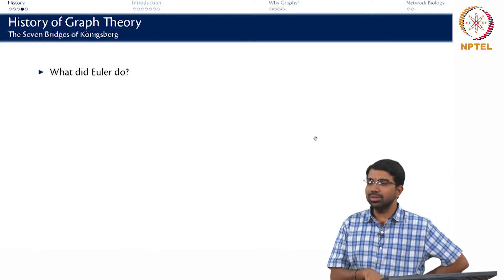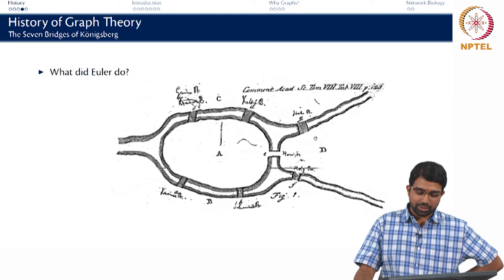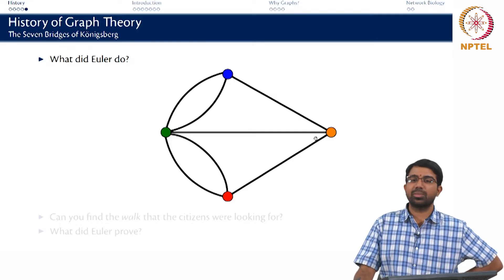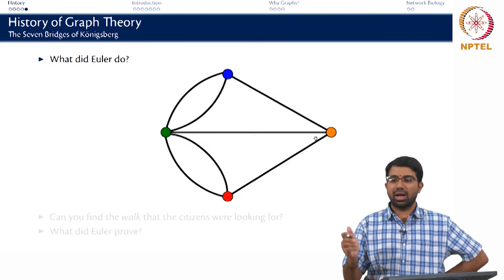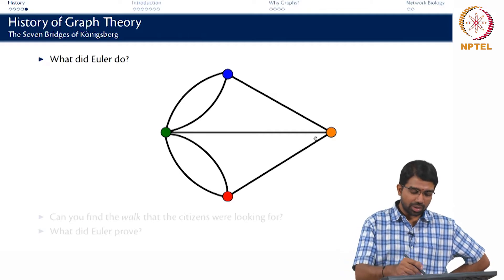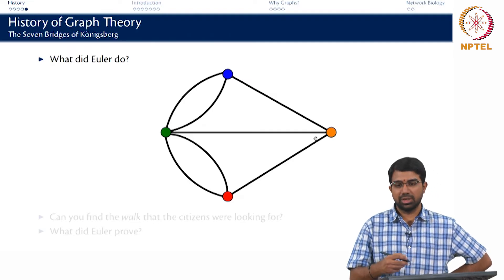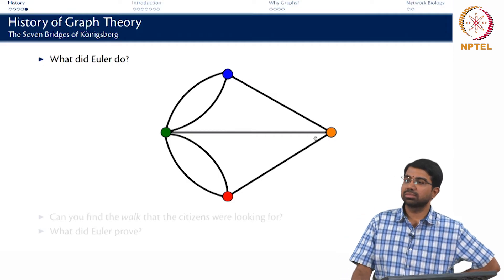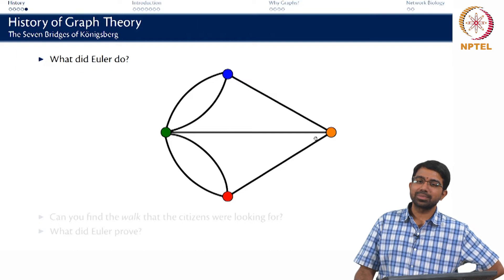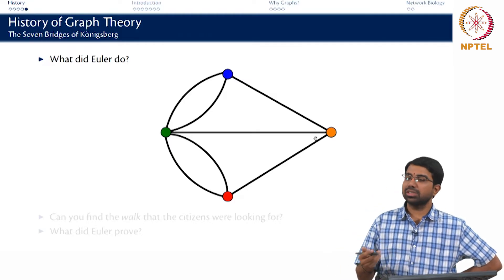Euler took this map and converted it into the first ever graph. A graph essentially represents relationships between nodes — between entities and their relationships. All the circles you see here are nodes and the edges represent some sort of relationship. In this case, the nodes are the islands in the city, and the edges represent the 7 bridges.